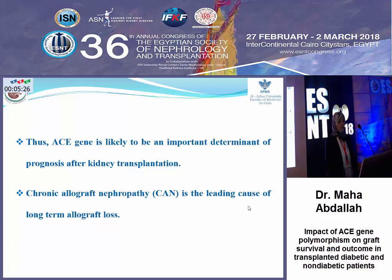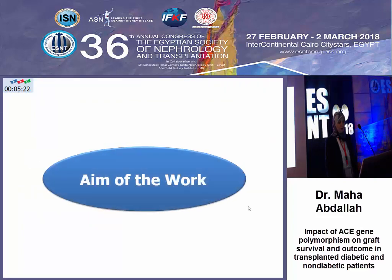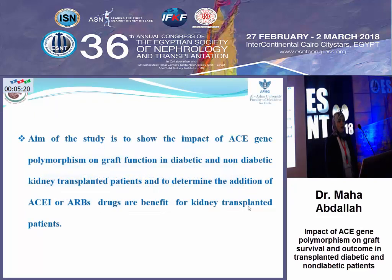Chronic allograft nephropathy is the leading cause of long-term allograft loss. The aim of our study is to show the impact of angiotensin converting enzyme gene polymorphism on graft function in diabetic and non-diabetic kidney transplantation, and to determine whether the addition of ACE inhibitors or ARB drugs is beneficial for kidney transplantation.